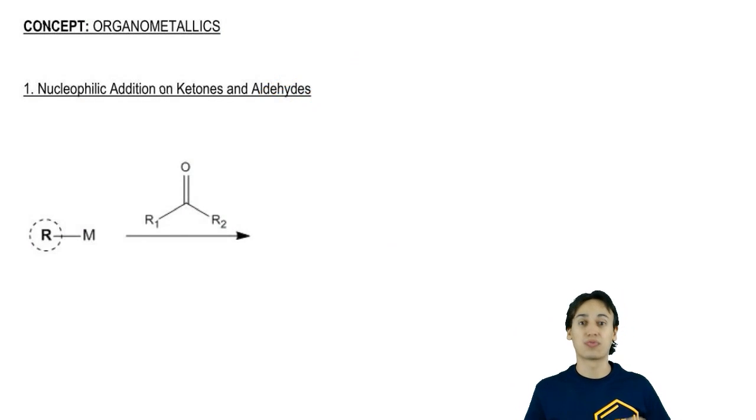I know organometallics freak a lot of people out. They look weird. They've got a lot of atoms on them. They're metals. But guys, these are some of the easiest compounds to work with in terms of pushing arrows because organometallics are just really strong nucleophiles. So we're going to do the same things with them as we would normally do with anything that has a negative charge.